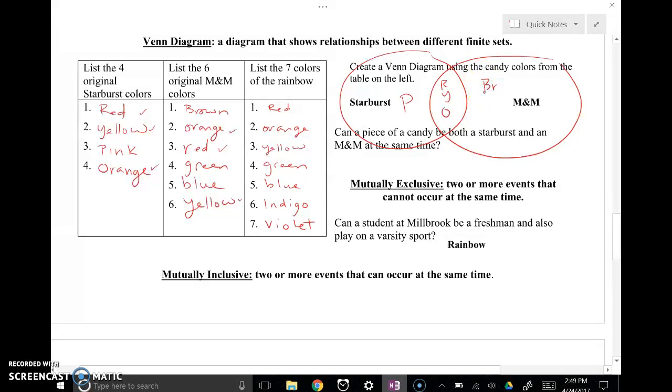Then over here with the M&M's that didn't get used, that was brown, that was green, that was blue. And it looks like the rest of those were used. So this would be my Venn diagram for my Starburst and my M&M's. Notice that nothing is written twice even though it is shared.